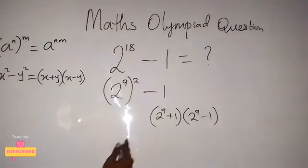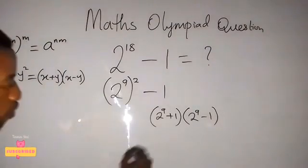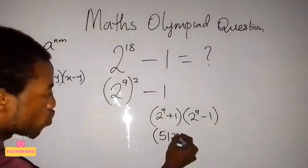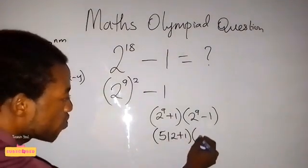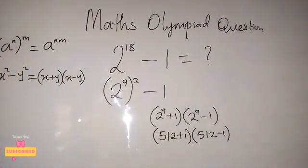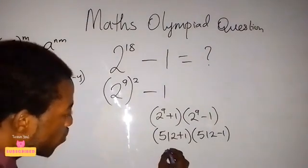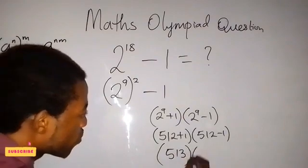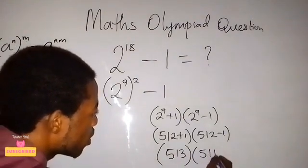And our 2 raised to power 9, that will give us 512. So this is 512 plus 1, then times 512 minus 1. And by the time we look at this, this gives us 513 times 511.